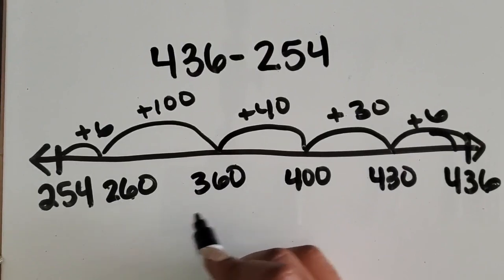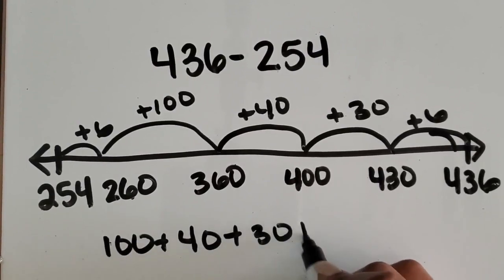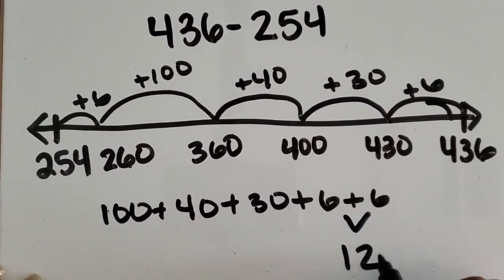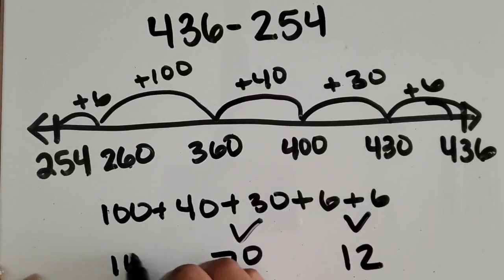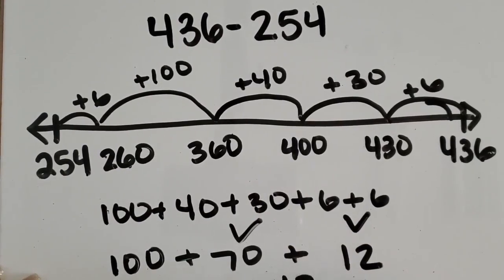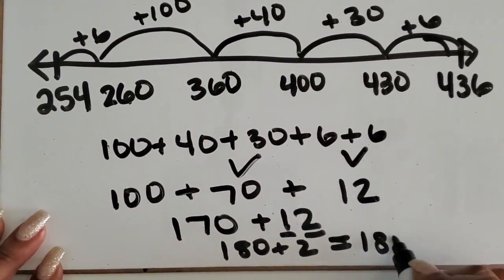Now I want to add my jumps together. I have one hundred plus forty plus thirty plus six plus six. Six and six is twelve, forty plus thirty is seventy, and I still have one hundred. So I can do one hundred seventy plus twelve. Adding the ten gives me one hundred eighty, and adding the two gives me one hundred eighty-two.